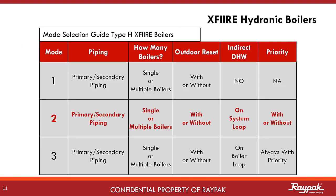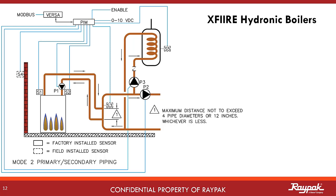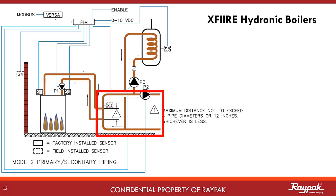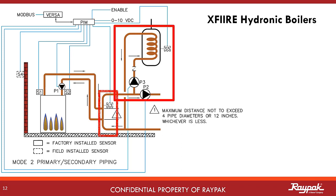Next, we will present Mode 2 for the X-Fire. Primary-secondary plumbing is required as before. The key thing that makes it a Mode 2 is the indirect domestic hot water on the system loop. In Mode 2 primary-secondary, you still have the two loops — the boiler loop and the system loop. The decoupler is still there to pressure-isolate the two loops. What makes this a Mode 2 is the addition of an indirect domestic hot water heat exchanger tank on the system loop.